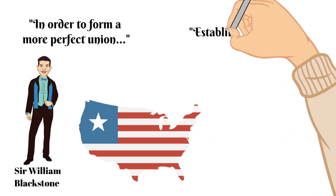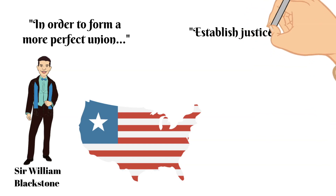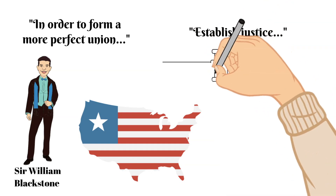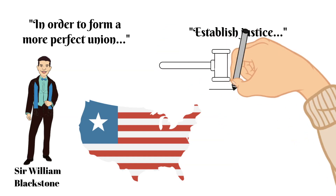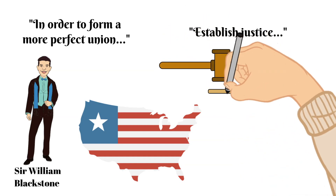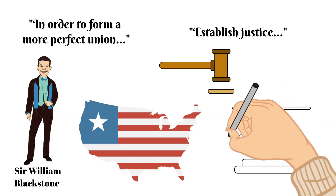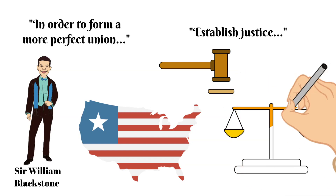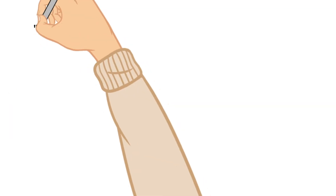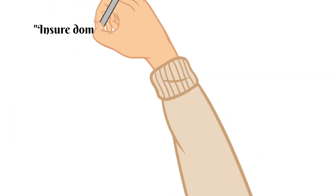It next says 'establish justice.' This means that no matter how much money someone had or how much status someone had in their community, they were equal under the law. The Founding Fathers wanted to establish an equal and fair rule of law.